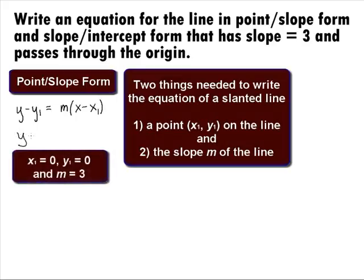Plugging in 0 for x1, 0 for y1 and 3 for m, we get the equation y minus 0 equal to 3 times x minus 0, which is the point-slope form of the line.